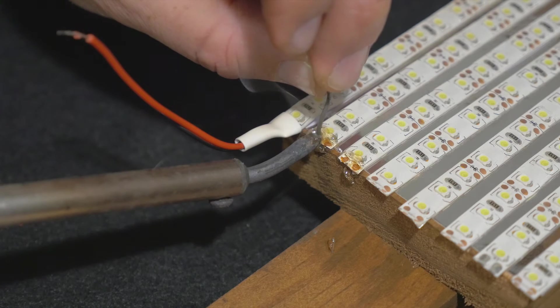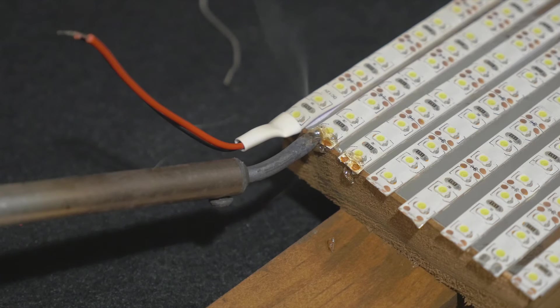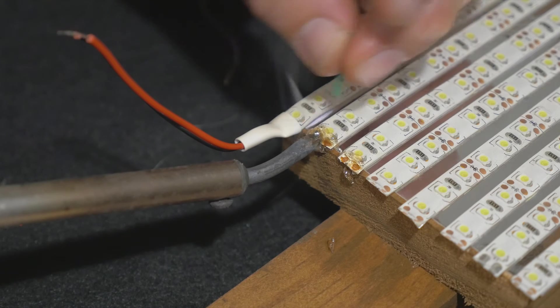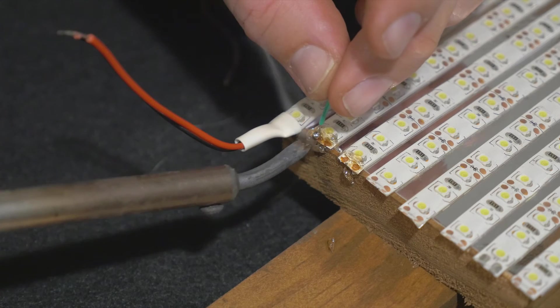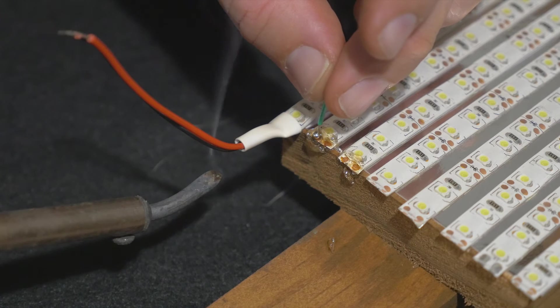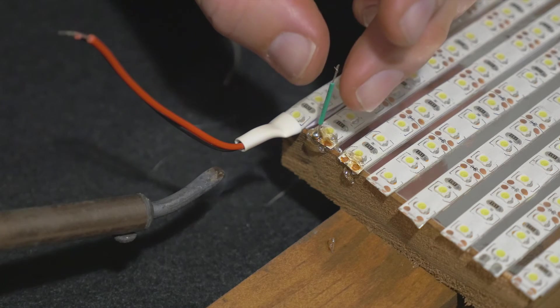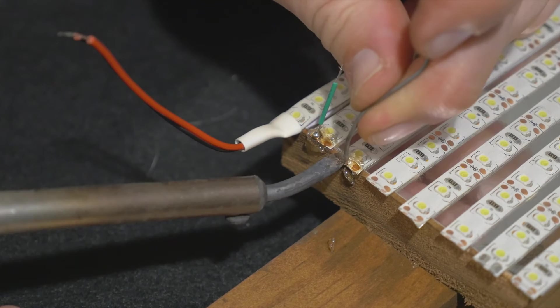Otherwise it's just a matter of simply heating up the copper with the solder on it and then applying a connector, a wire, to it. I'm using really thin gauge wire here and I'm joining it positive to positive.